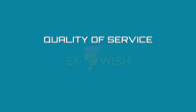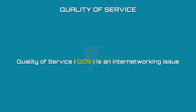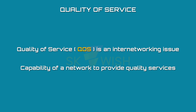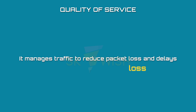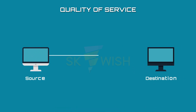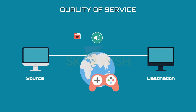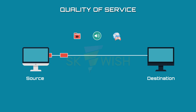Quality of Service is an inter-networking issue. We can define quality of service as the capability of a network to provide quality services. It manages traffic to reduce packet loss and delays. The primary goal of QoS is to provide priority for a specific type of data. For example, real-time transmission like video, audio, and online games need more priority over passive data like file transfer.